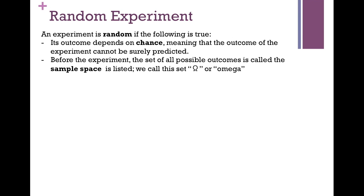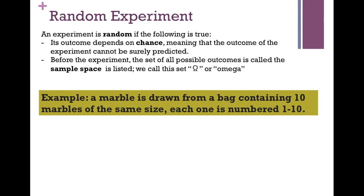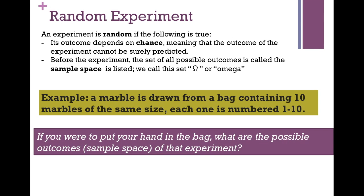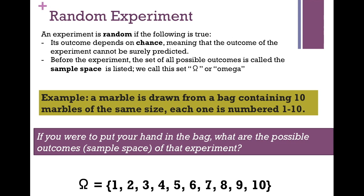So basically, all the possible outcomes form the sample space. In the example of the coin, the outcomes are heads or tails — that's the sample space. Here's another example: a marble is drawn from a bag containing 10 marbles of the same size, each numbered 1 to 10. If you were to put your hand in the bag, what are the possible outcomes or sample space? The sample space omega would be 1, 2, 3, 4, 5, 6, 7, 8, 9, or 10. This is a random experiment because if you put your hand in the bag, you have no idea what number you're going to pull — it's chance.